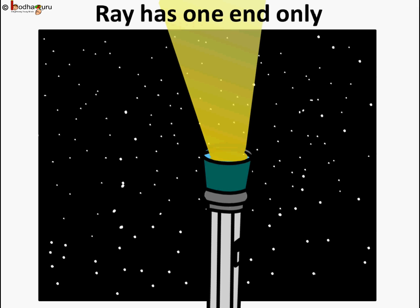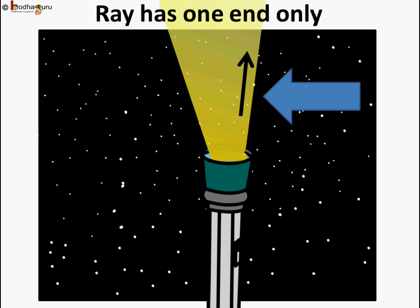If we put the torch in ON position and point it towards the sky, the light coming from it goes out and it fades away after a certain distance and we cannot see its end. Actually, the light keeps going in a straight line endlessly, but we cannot see it after a certain limit. We commonly call it a ray of light.